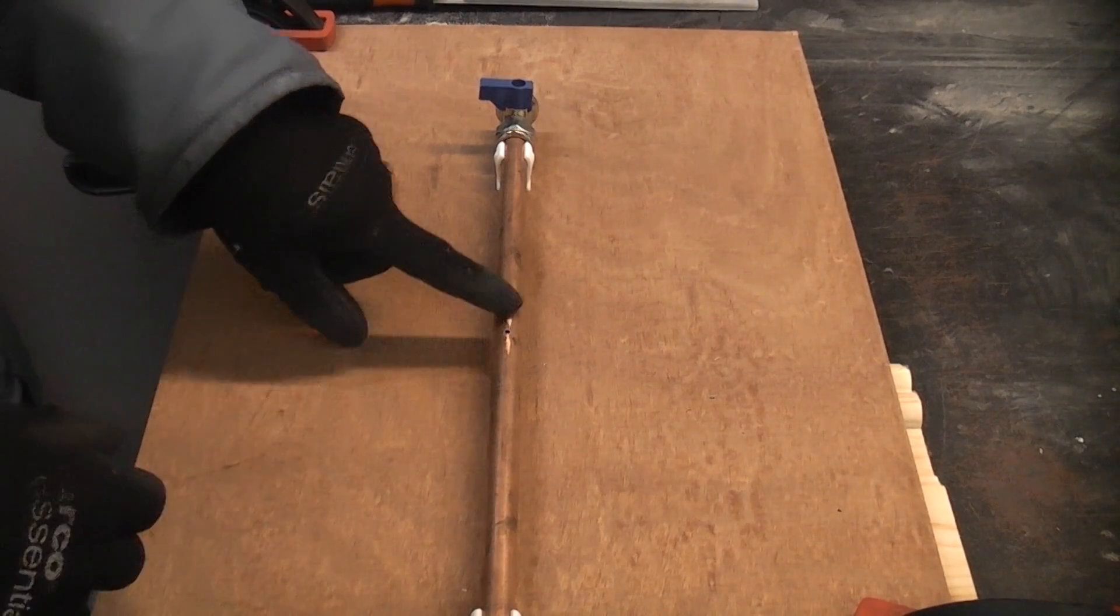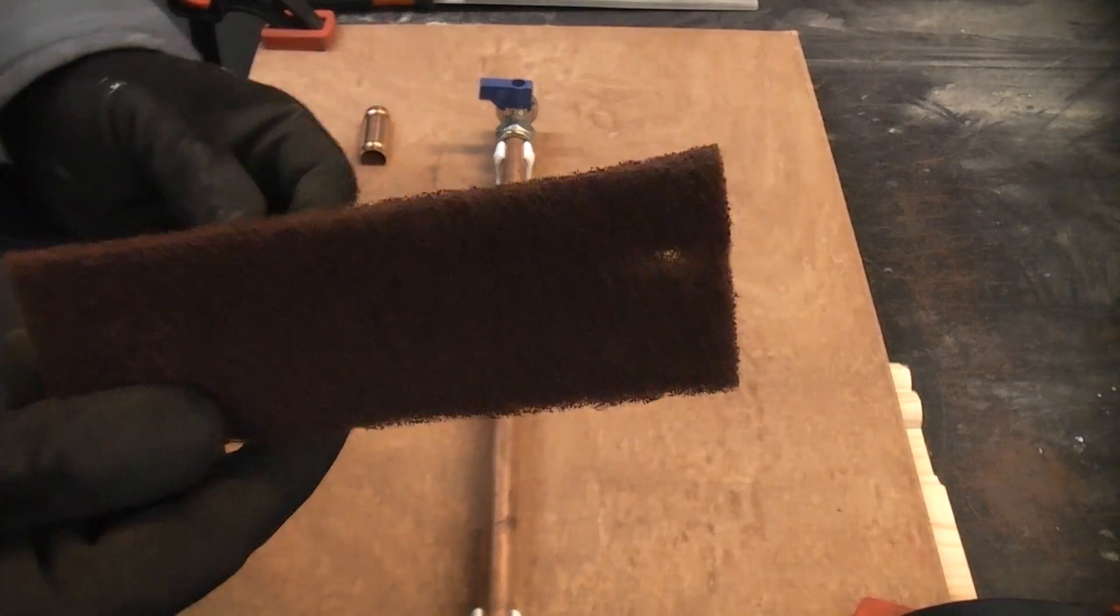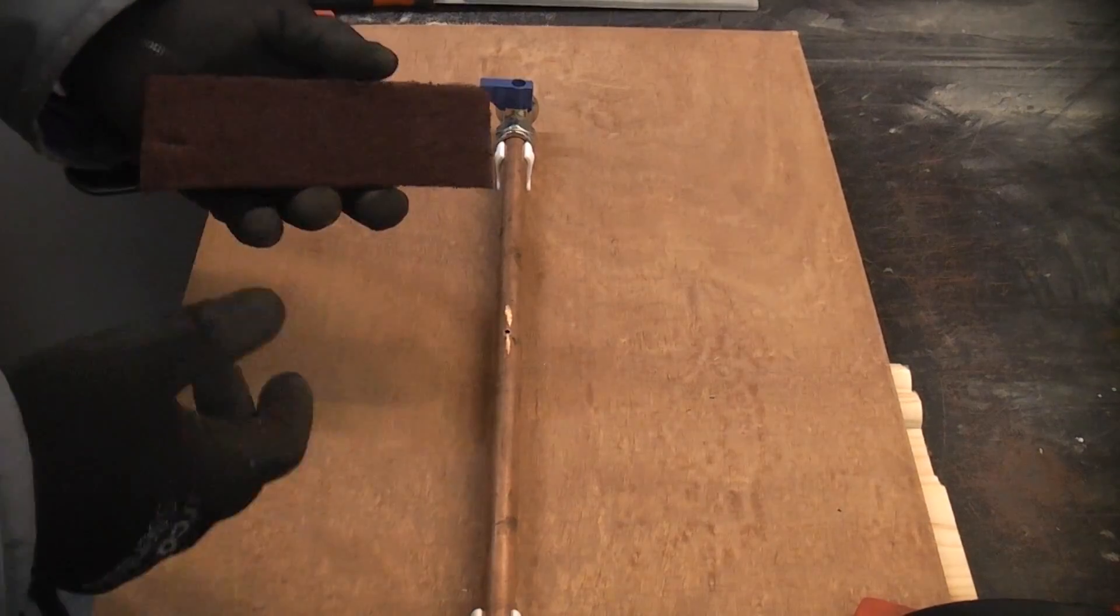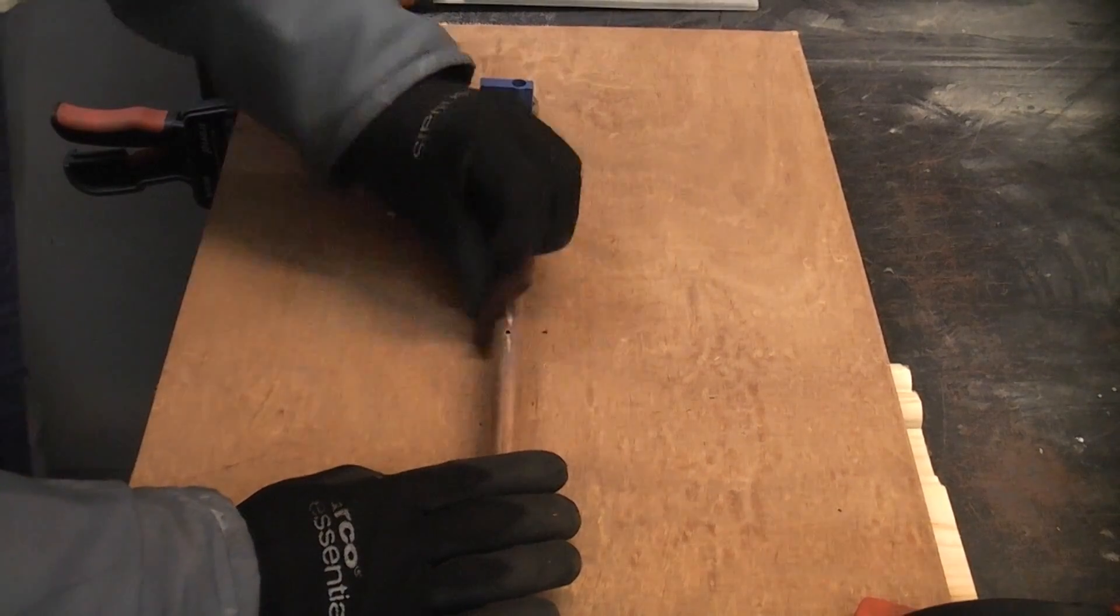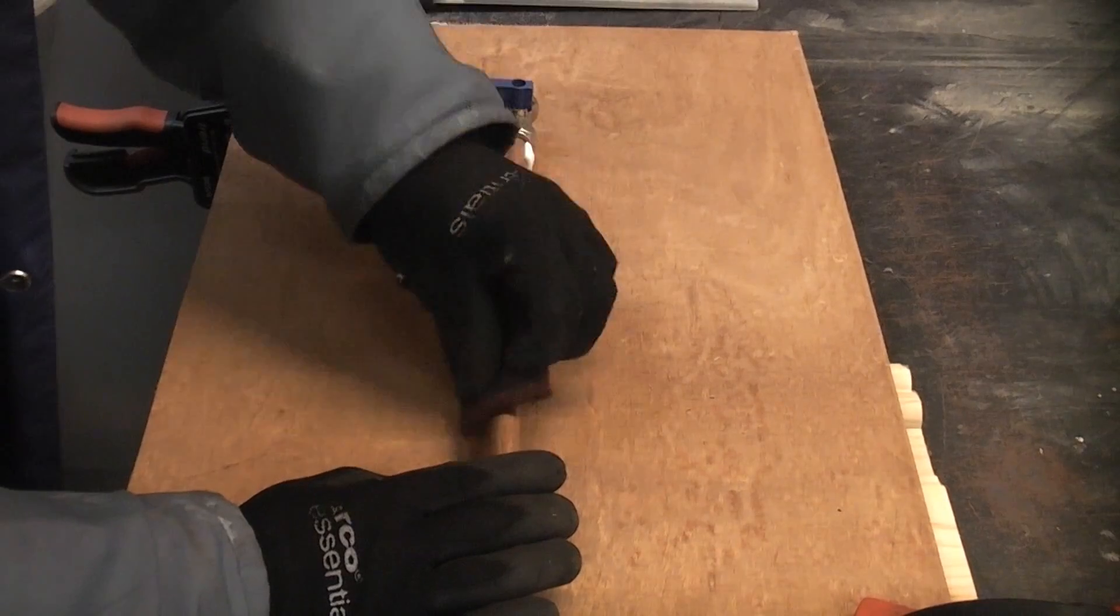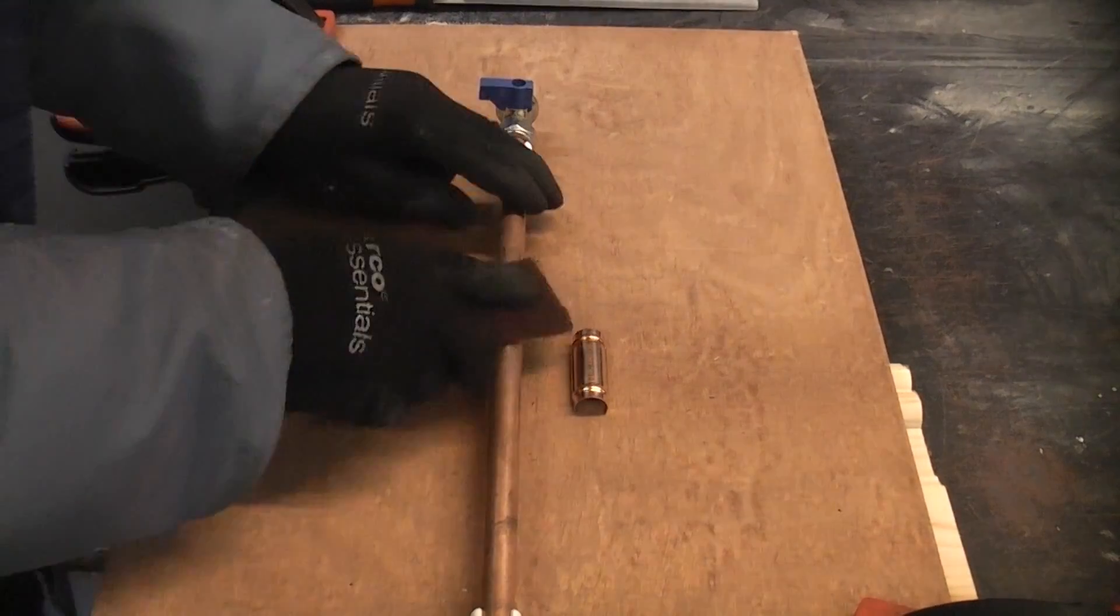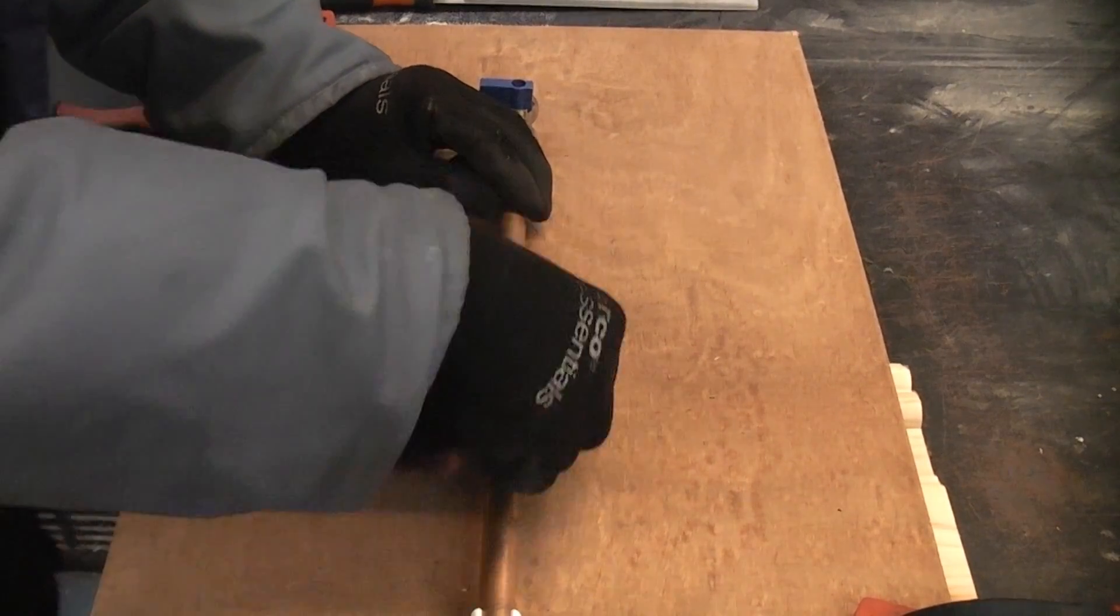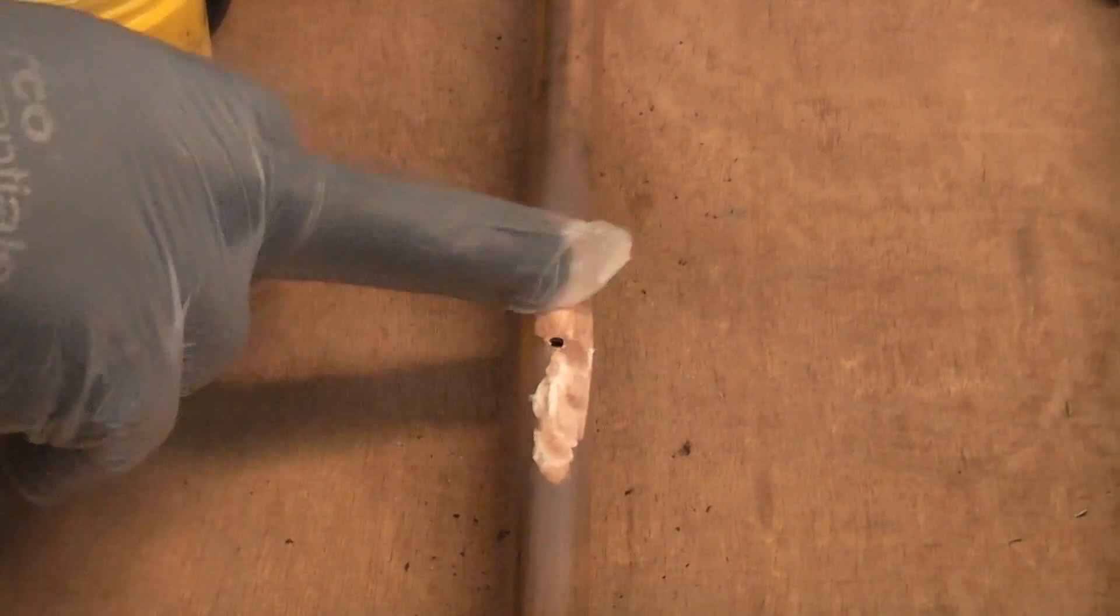So before we can solder this on, we need to give that a clean. One of the best things for cleaning copper pipe before soldering is a Scotch bright pad. This is a piece that I've cut off. I'd not seen these for sale previously, and it was actually a YouTube member that pointed me towards these. Now I'm going to apply a little bit of flux to the pipe. This will clean it even further. You can apply this with a flux brush if you have one.